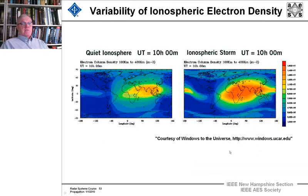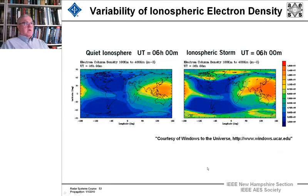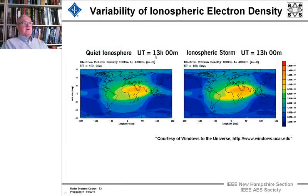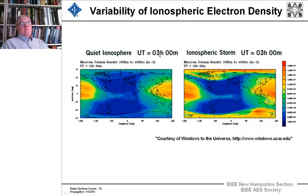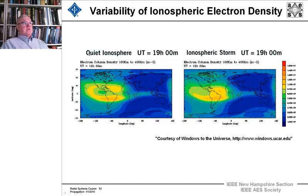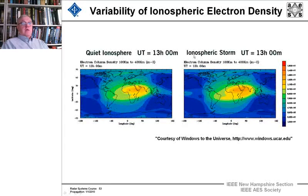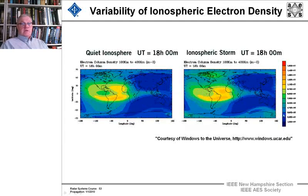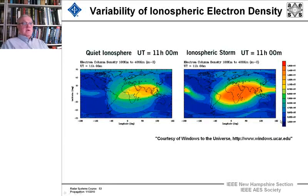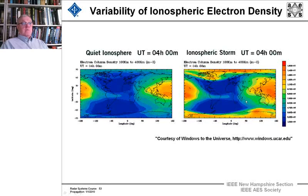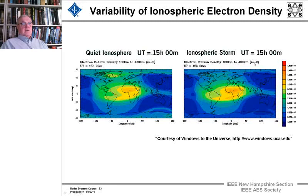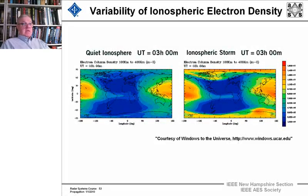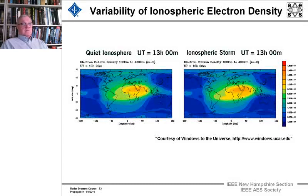This image from a university consortium shows how the ionosphere changes over a day in universal standard time — both in a quiet ionosphere and during an ionospheric storm. These show the different levels of ionosphere density in a column from 100 to 400 kilometers altitude, measured as electron density in per meter squared. As you can see, over the world it's very, very variable.